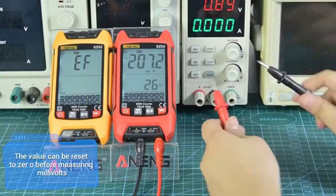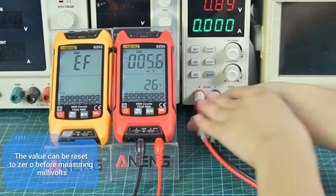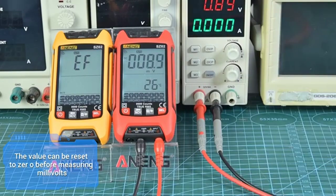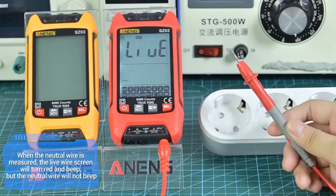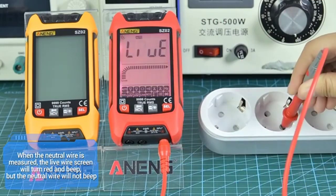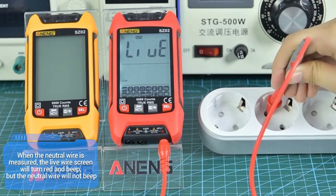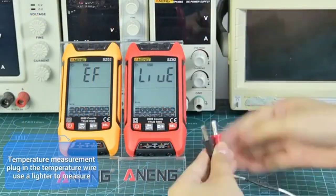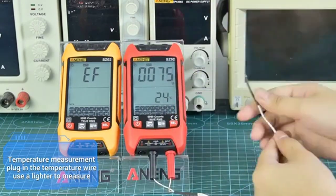The value can be reset to zero before measuring millivolt. When measuring live wire, the screen will turn red and beep, but the neutral wire will not beep. For temperature measurement, plug in the temperature wire and use a lighter to measure.